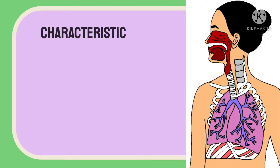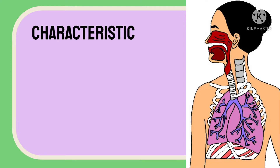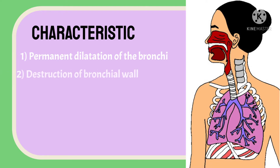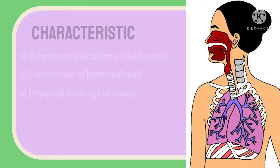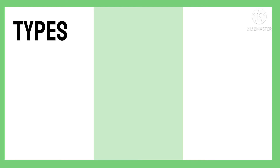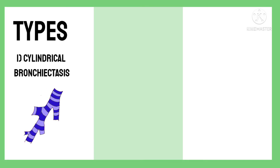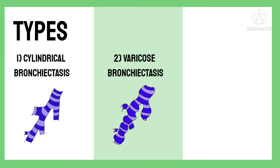The characteristic features of this disorder include permanent dilation of bronchi, destruction of the bronchial wall, and impaired drainage of bronchial secretions. Morphologically, there are three primary types of bronchiectasis: cylindrical bronchiectasis, varicose bronchiectasis, and cystic bronchiectasis.